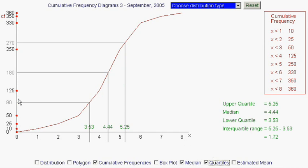The quartiles are in a similar way, except that we go for the quarter point, that's the 90 point, to get the lower quartile, which is 3.53, and we go to the 270 point, which is the 3 quarters way value, to get our upper quartile, 5.25.